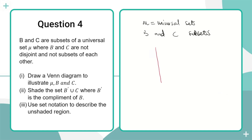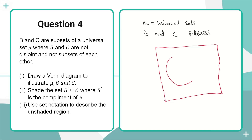Not disjoint means that the sets can intersect each other, or one can be inside the other. When one is inside the other, we say one is a subset or full subset of the other. But they also give the condition that one is not a subset of the other, so it means they overlap each other.